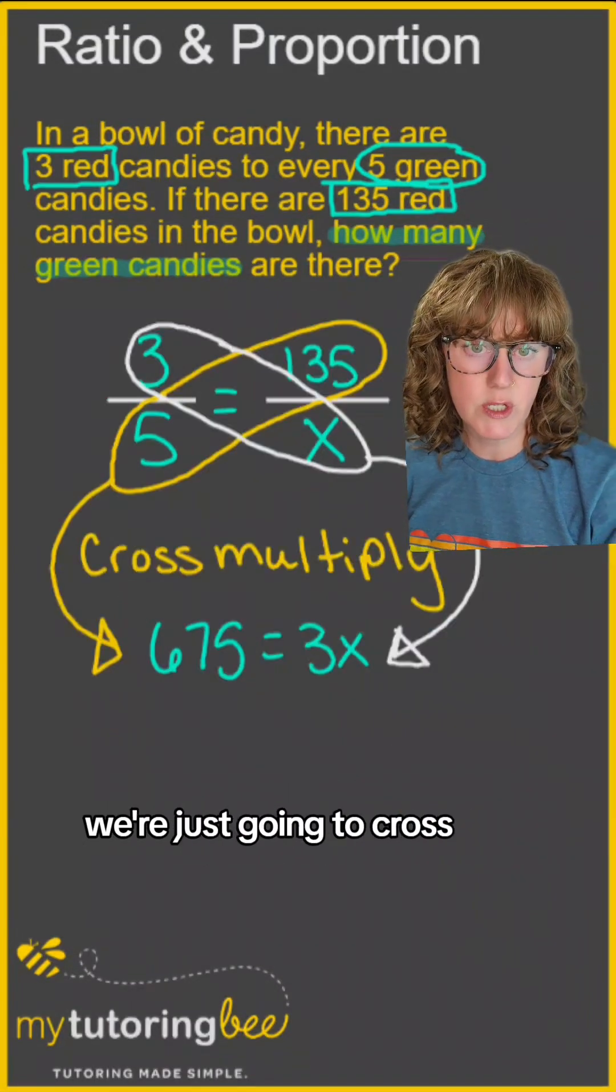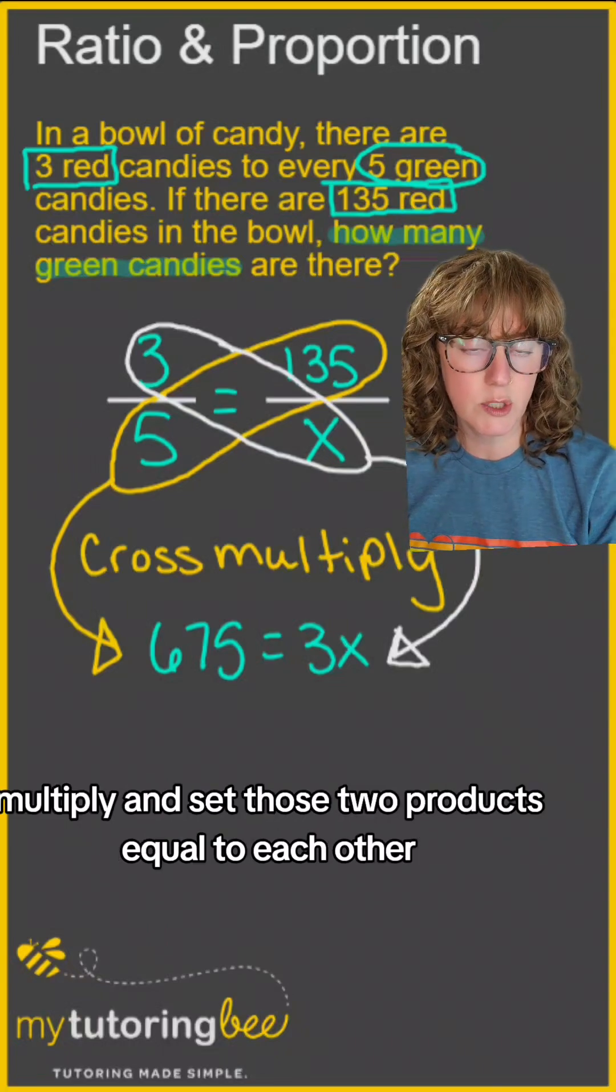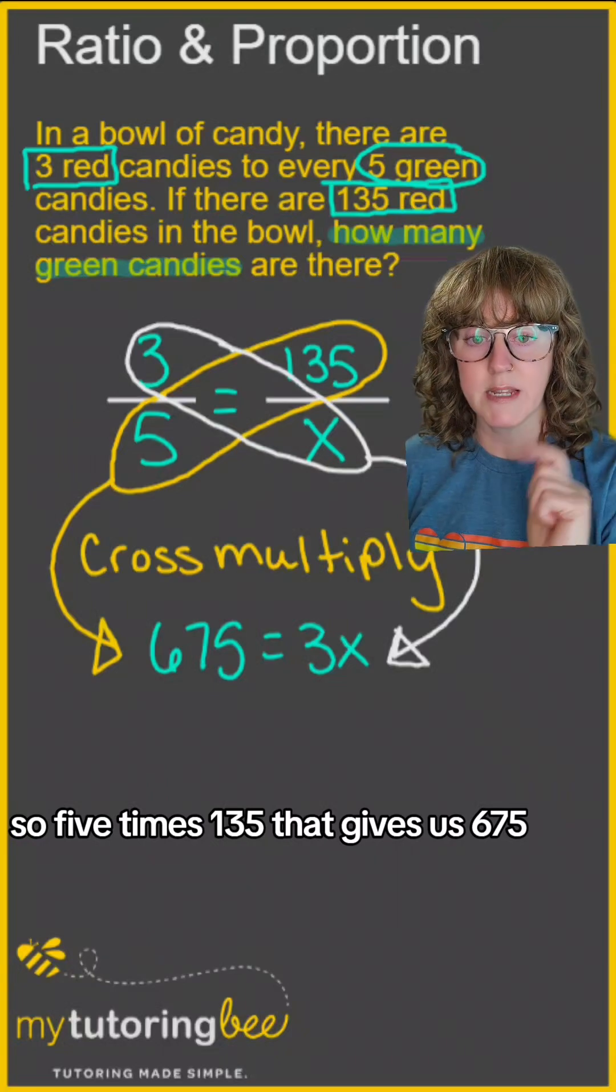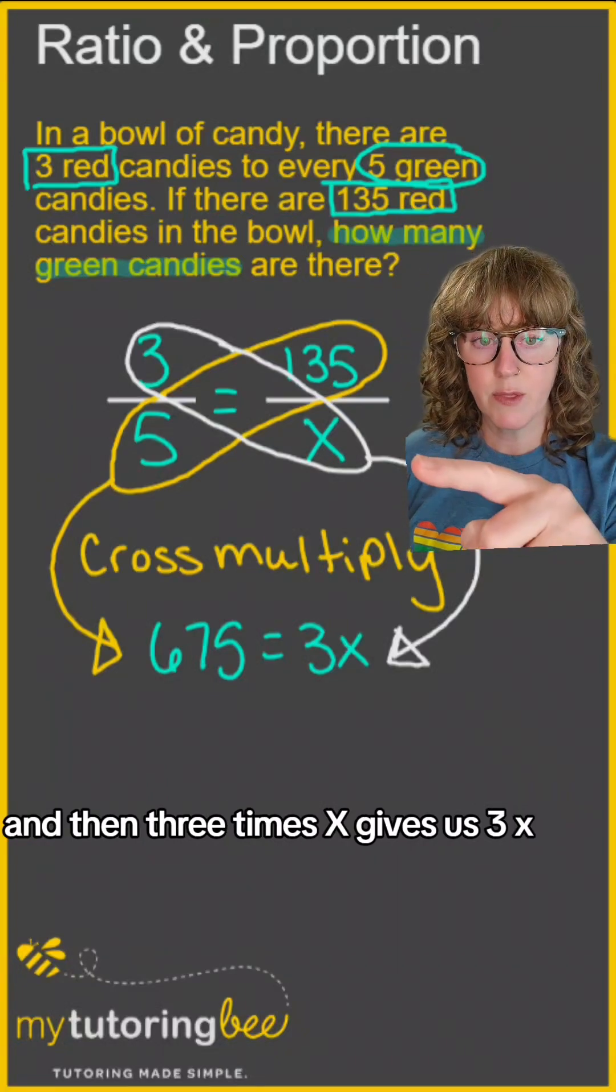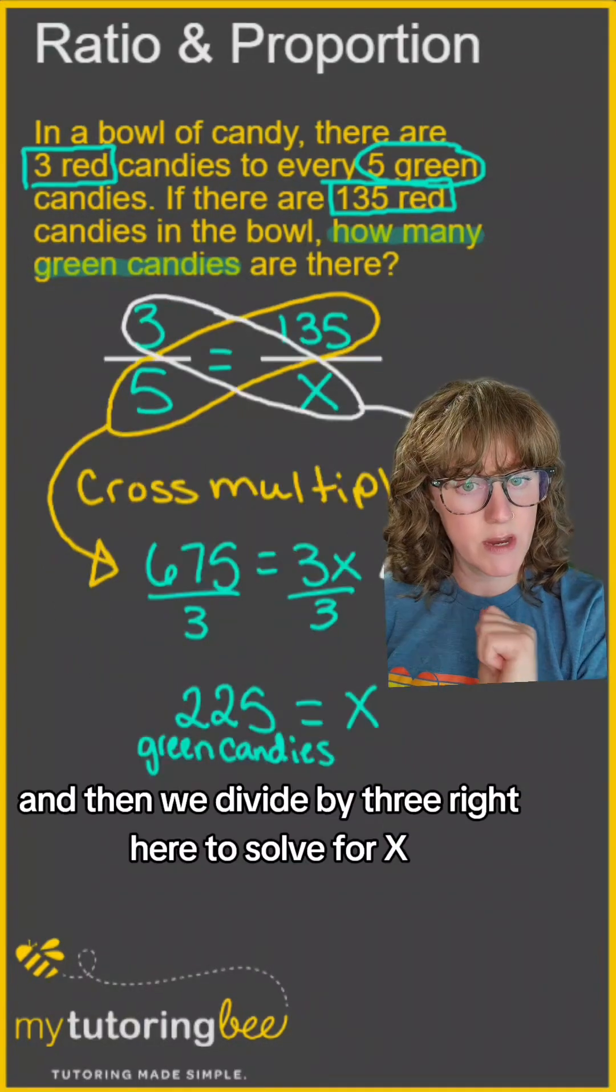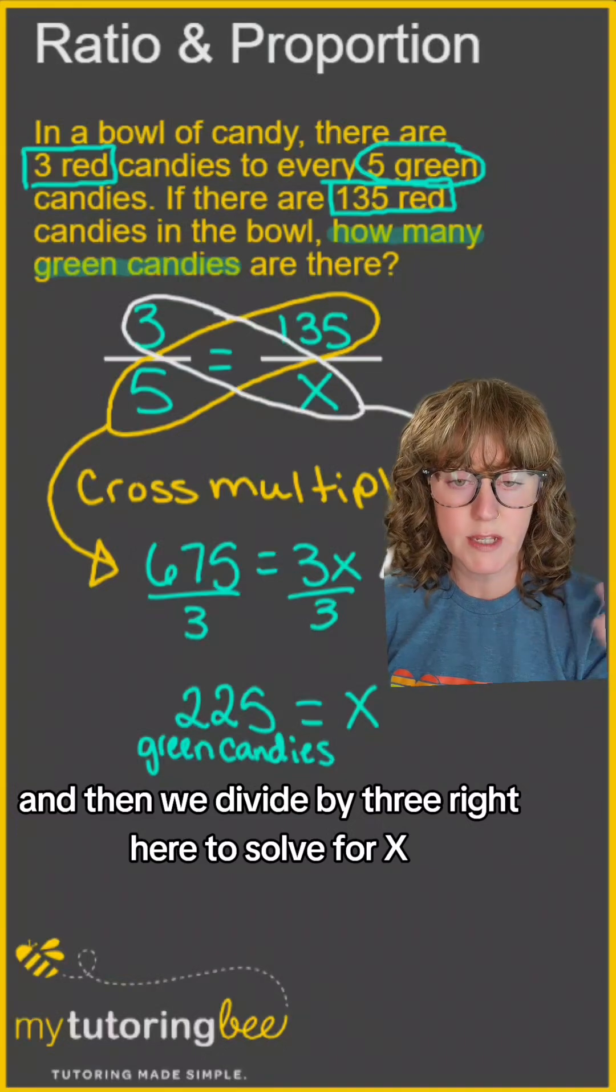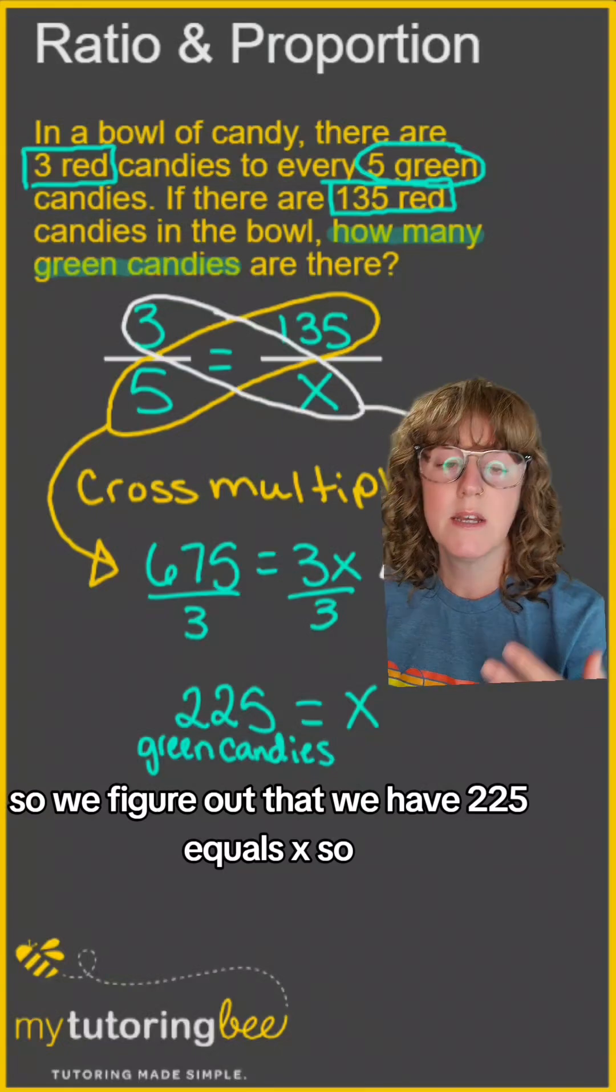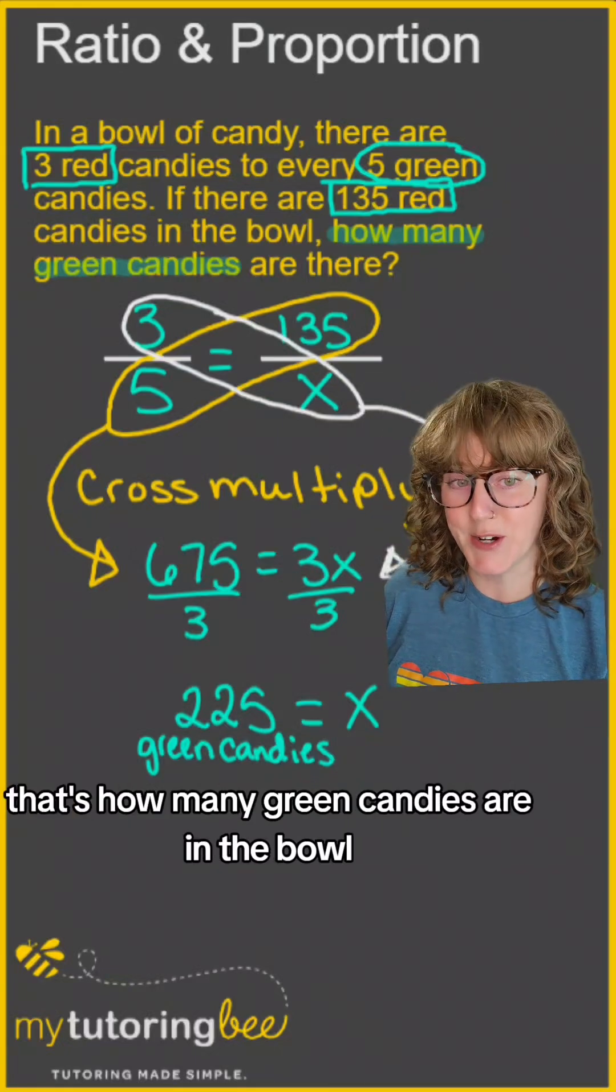And then to solve, we're just going to cross multiply and set those two products equal to each other. So 5 times 135 gives us 675, and then 3 times X gives us 3X. And then we divide by 3 to solve for X. So we figure out that 225 equals X. That's how many green candies are in the bowl.